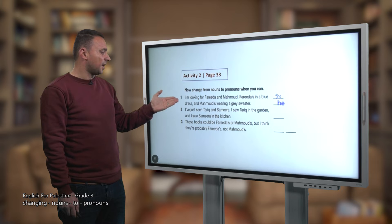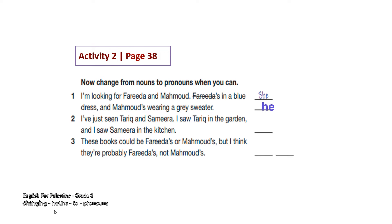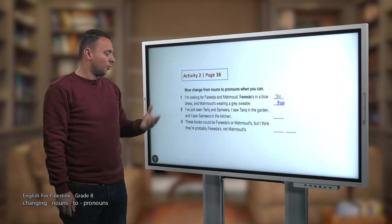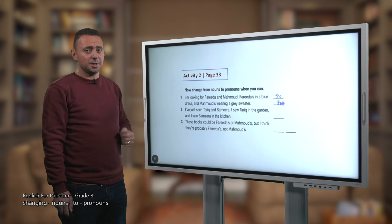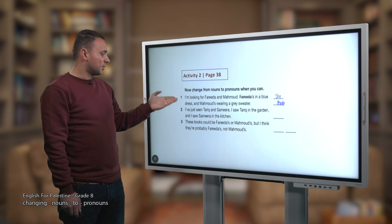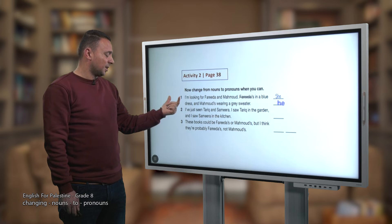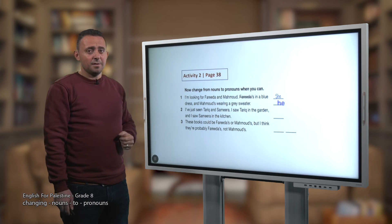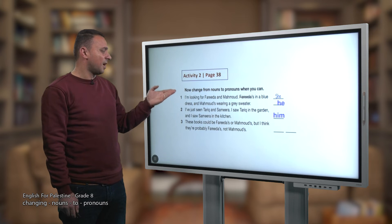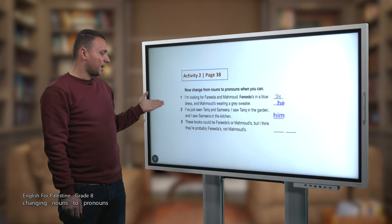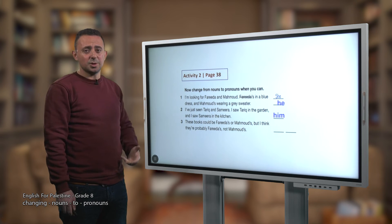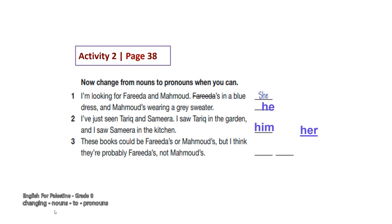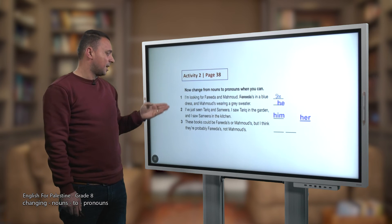Number two: 'I've just seen Tariq and Samira. I saw Tariq in the garden and I saw Samira in the kitchen.' Tariq functions as an object because it came after the verb 'seen', so we replace Tariq with 'him'. Samira also came after the verb 'saw', so it's an object too — we replace Samira with 'her'. So 'him' refers to Tariq and 'her' refers to Samira.